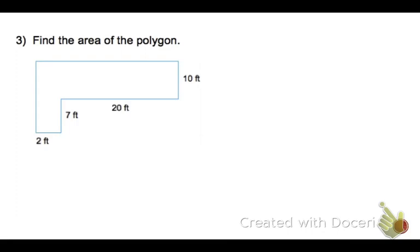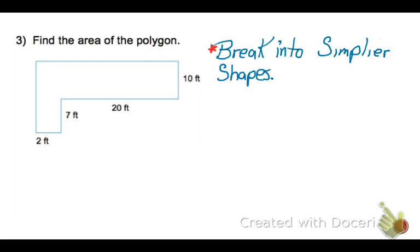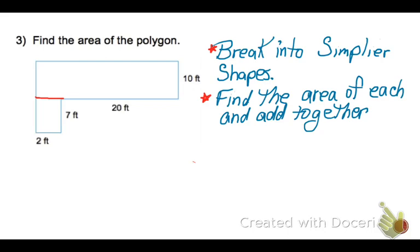Now, sometimes you're going to be asked to find the area of a composite polygon, and that is a polygon that's made up of simpler shapes. So, the very first thing you're going to do is you're going to break it into simpler shapes, and then you're going to find the area of each of those shapes and add them together.